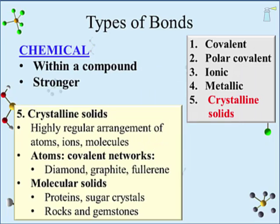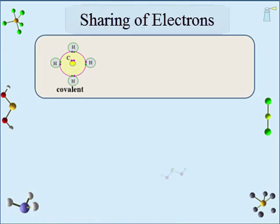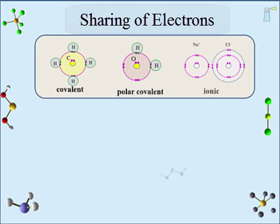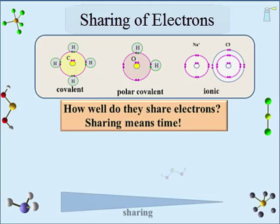Let's take a closer look at the first three types of bonding: covalent, polar covalent, and ionic. A telling question is how well do they share electrons? Sharing means time — how much time do the shared electrons spend around one atom versus the other. We can use a triangle to demonstrate the magnitude of sharing. Covalent bonds share the most — practically equal — and get the widest part of the triangle. Then polar covalent bonds share but unequally. Finally, ionic bonding has no sharing at all.